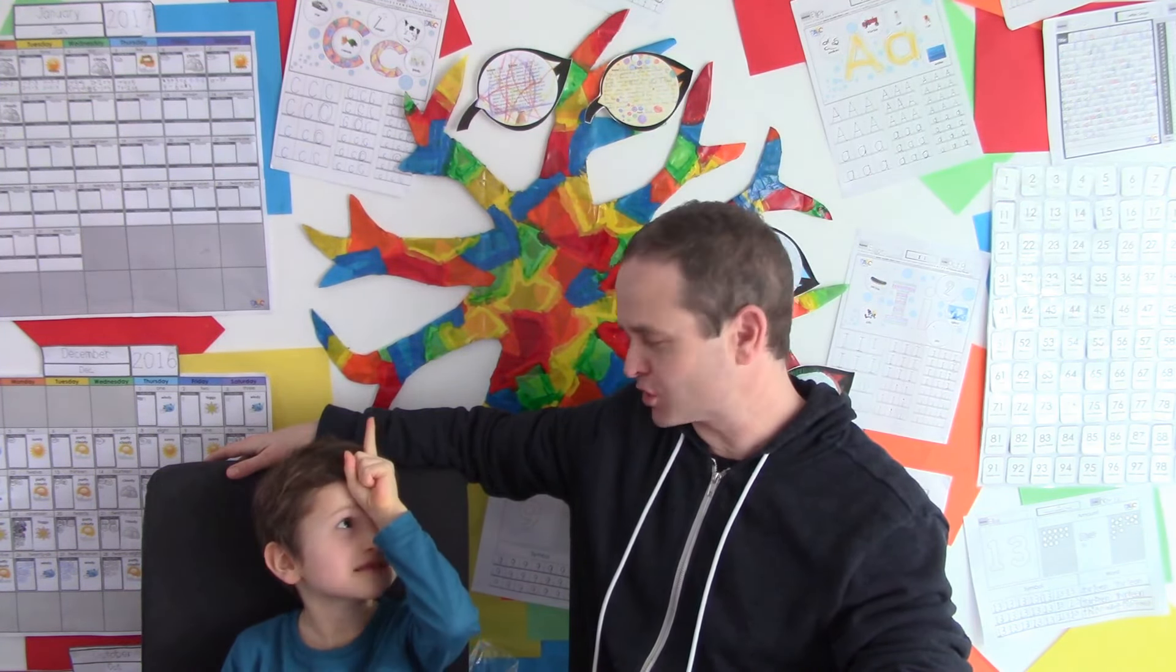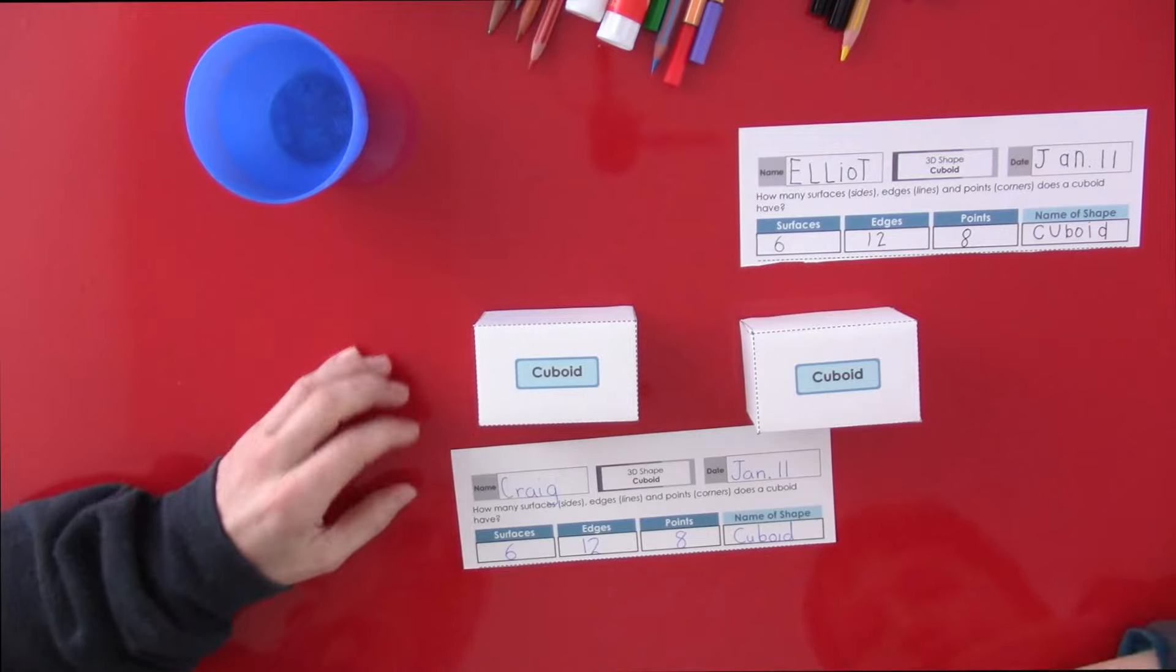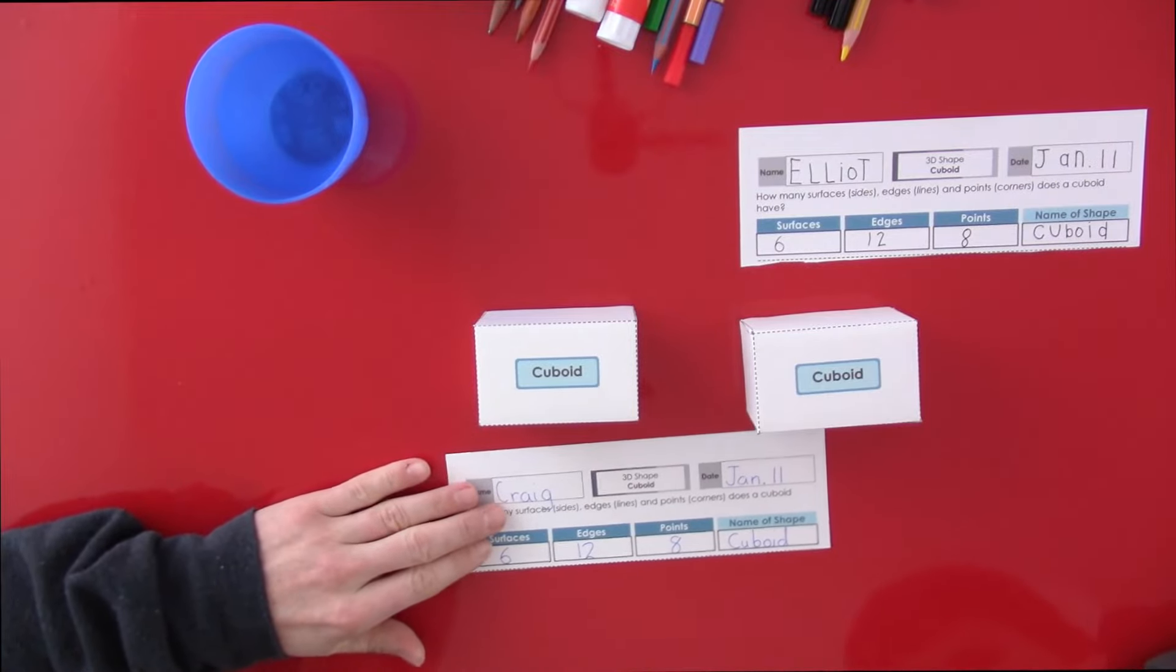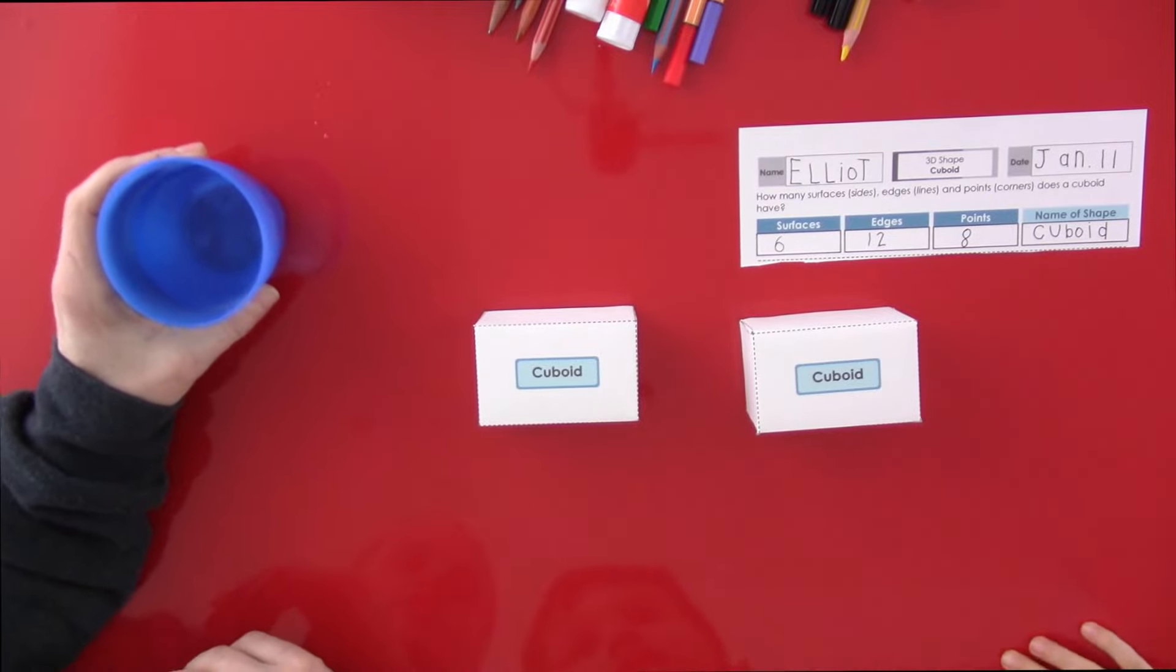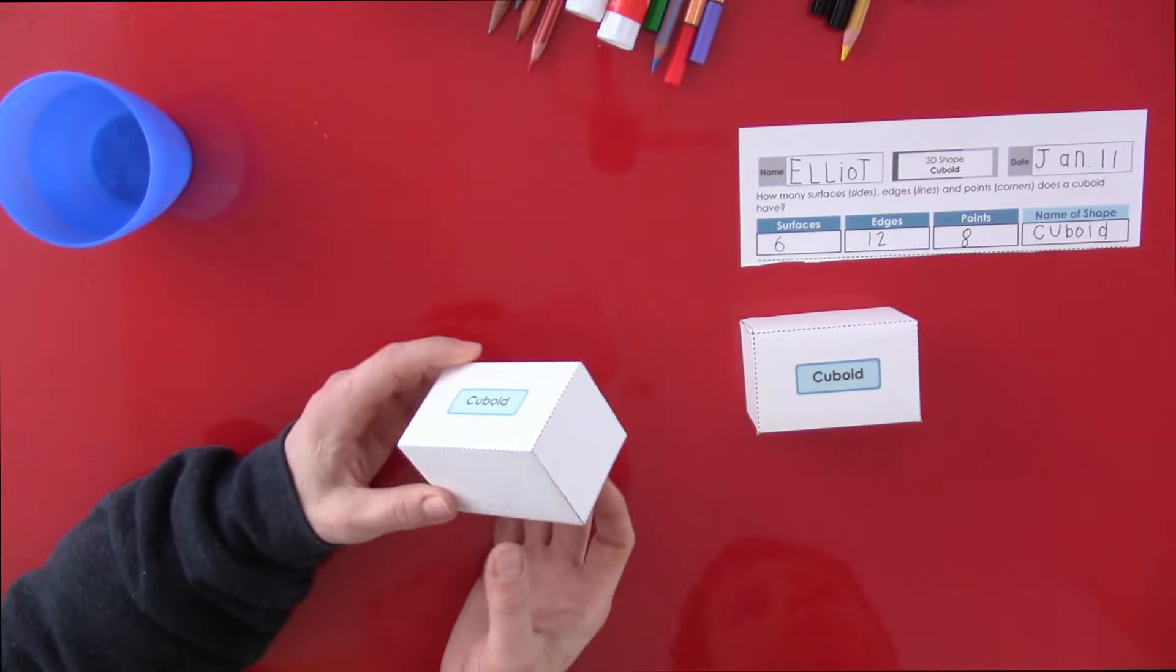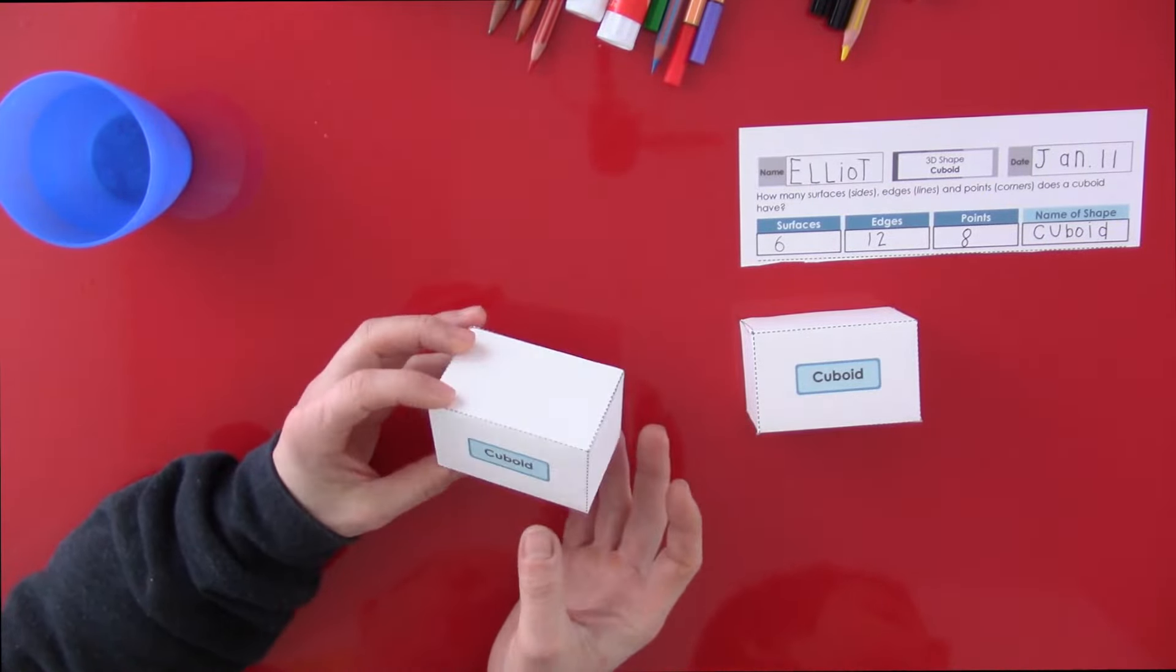Okay, so we're back for part two of our piggy bank creation. And we've got our two cuboids here, ready to go, built from part one. And Elliot and I discovered that a cuboid has six surfaces, twelve edges, and eight points. And the second part of our piggy bank creation here involves covering the cuboid in paper mache.